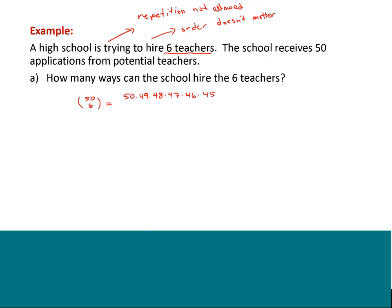If you only have 50 times 49 times 48 times 47 all the way to 45, that says order matters. So this part up top tells you order matters. To get rid of that, you divide by 6 factorial — the number of ways to arrange the six people once you've already established which six you're choosing. Dividing by 6 factorial gets rid of the order. So at this point, once we figure out this integer, it's saying you're not allowed to hire the same person for more than one job and order doesn't matter.